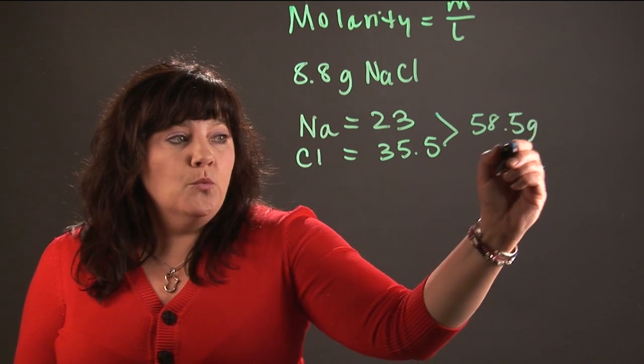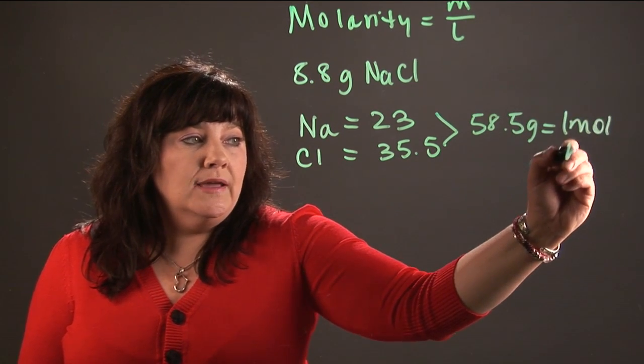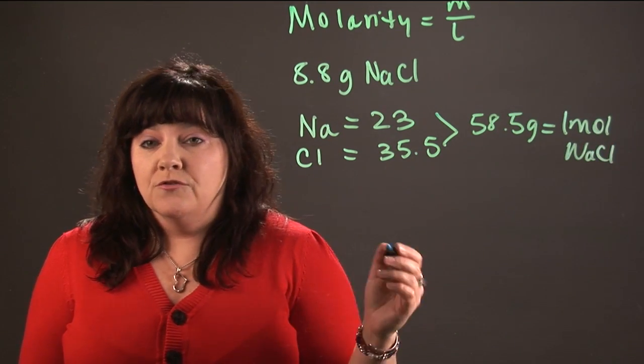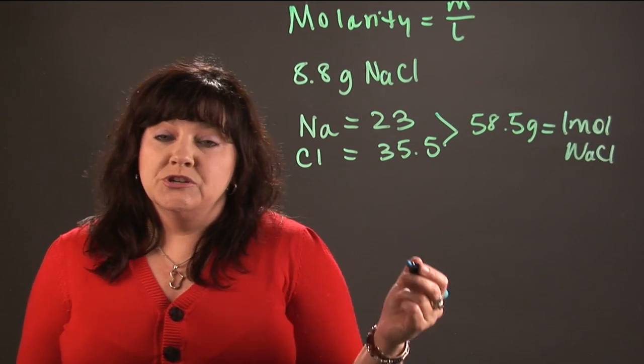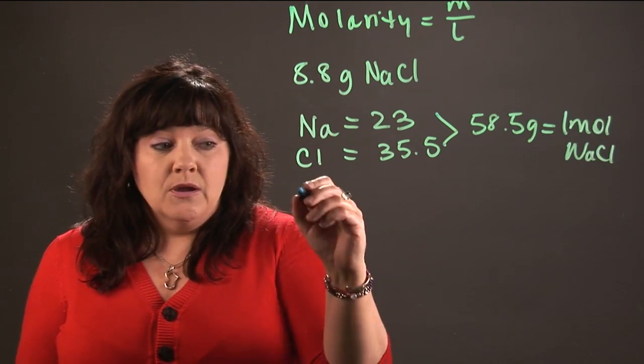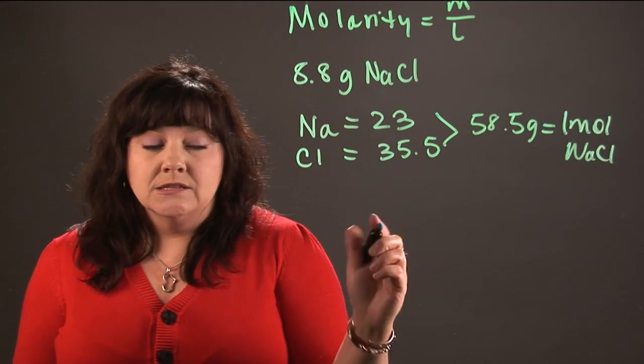Next we're going to set up something that's called a conversion problem. Some teachers call it dimensional analysis, some teachers call it the factor label method. It's a way that we set up an equation where we're going to cancel out units.